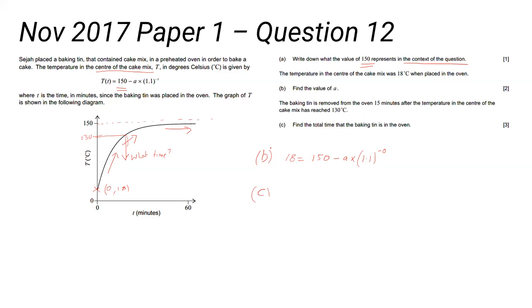And then it was removed 15 minutes after that. Find the total time the baking tin is in the oven. Okay, so that's for three marks—that's actually a relatively straightforward question. Anyone have any questions about part c?